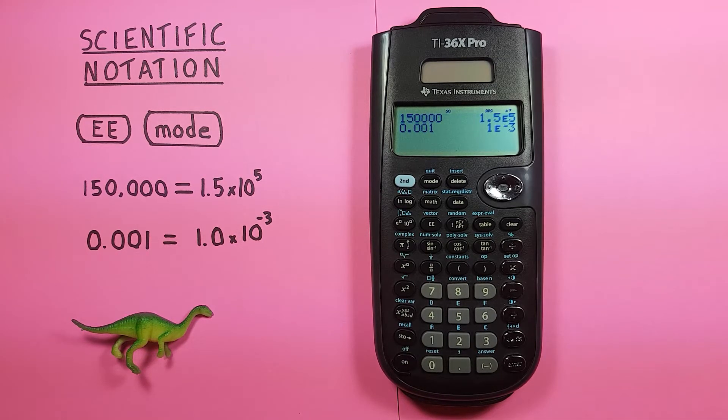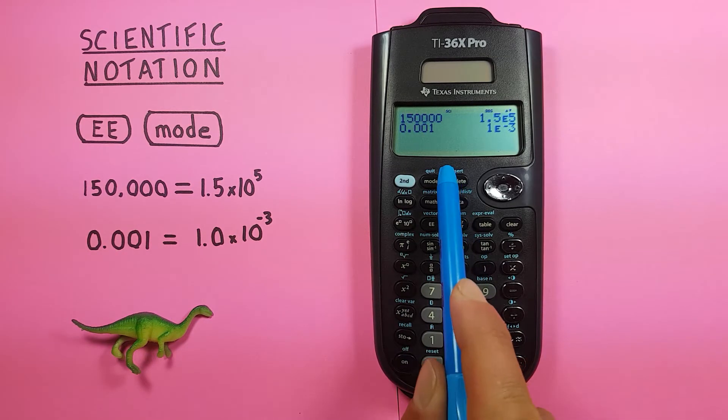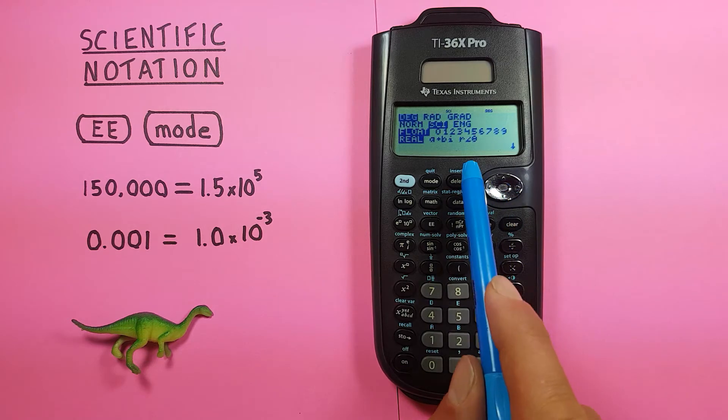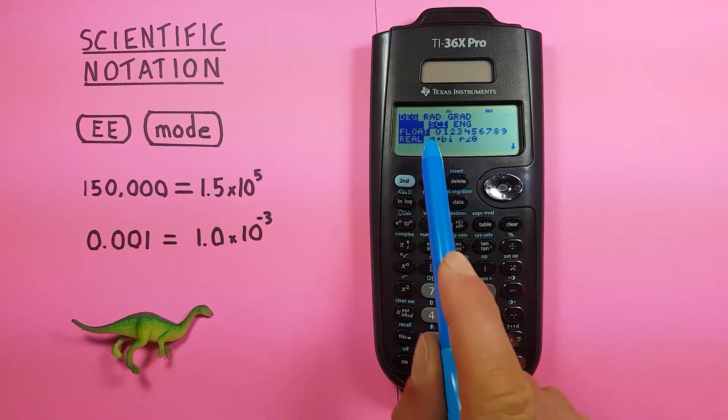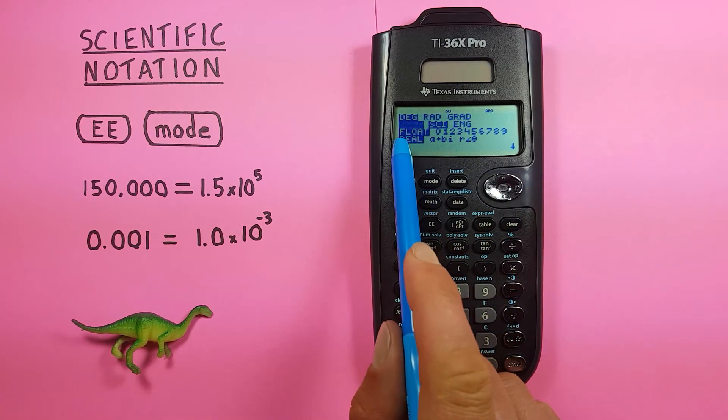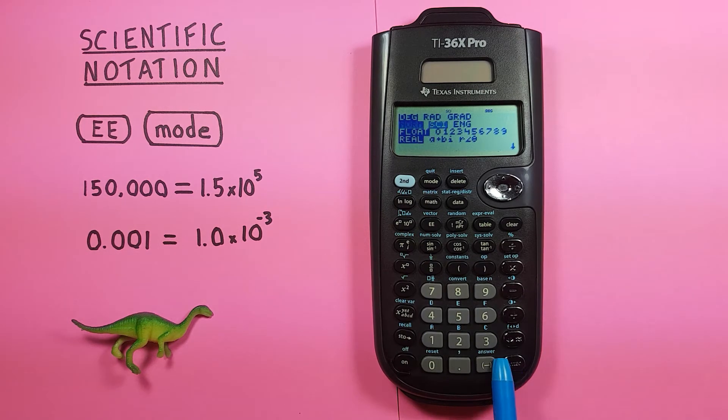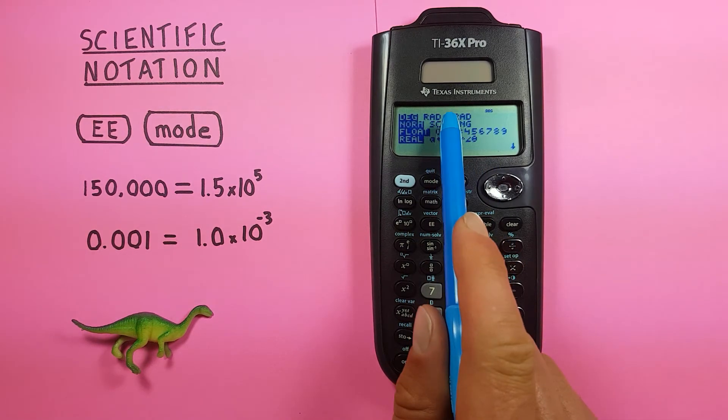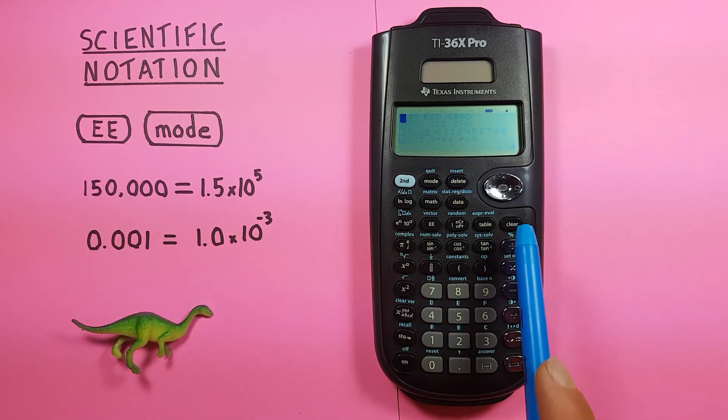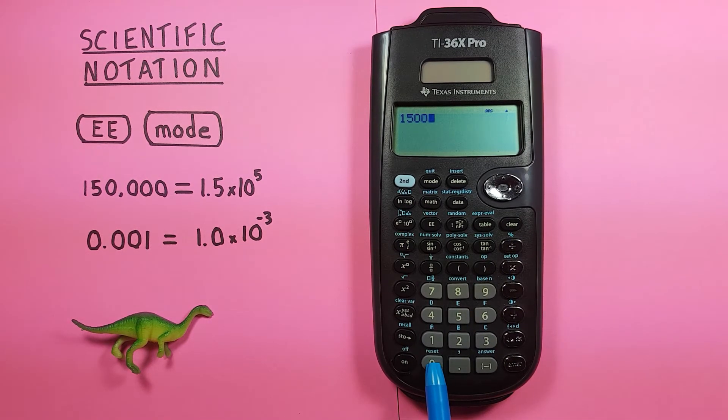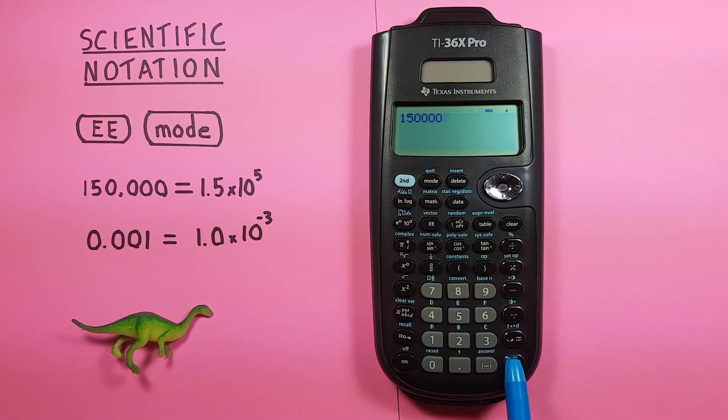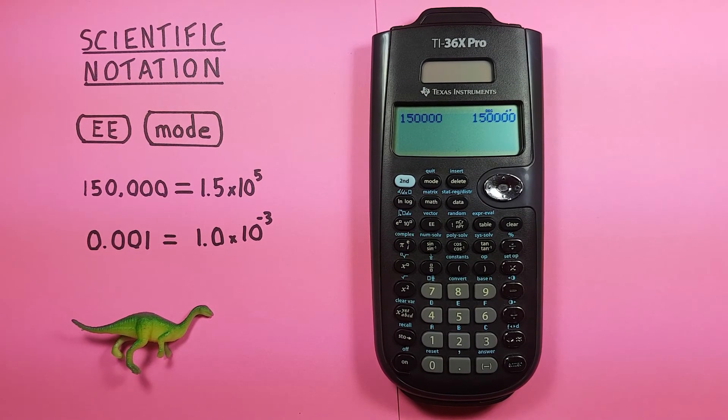And if we're done with this mode and want to go back to our normal mode, we can do that by pressing the mode key again, and then taking our cursor down one to the norm or normal mode there. Press enter, you can see the SCI is gone now. So if we press clear, and this time enter 150,000, press enter, it doesn't get converted. We're back to our normal calculator mode.